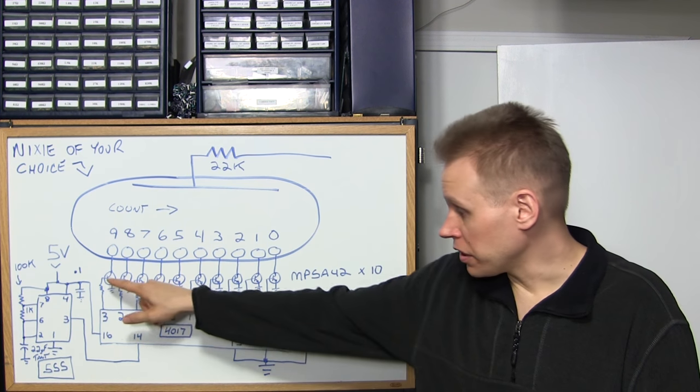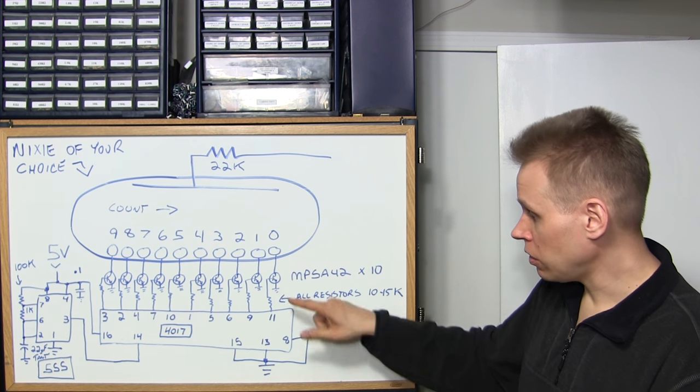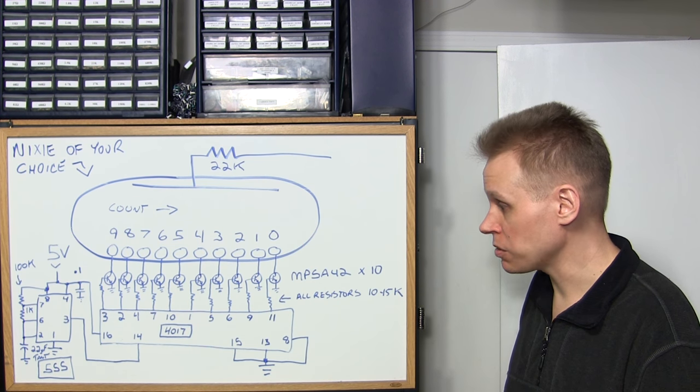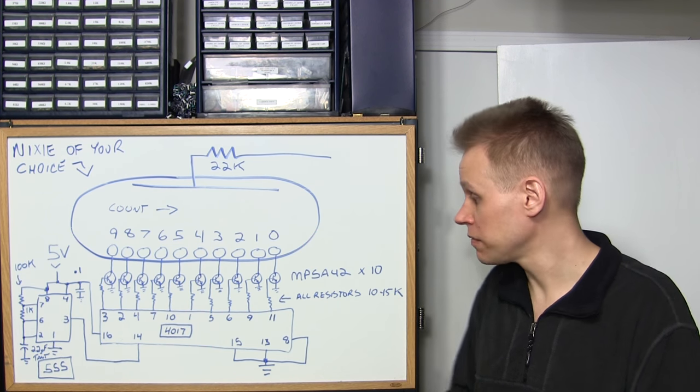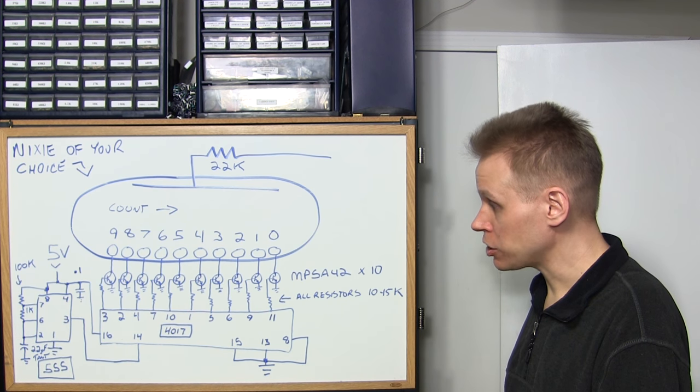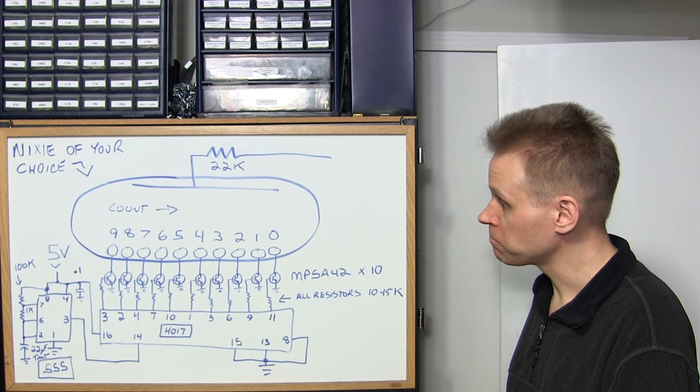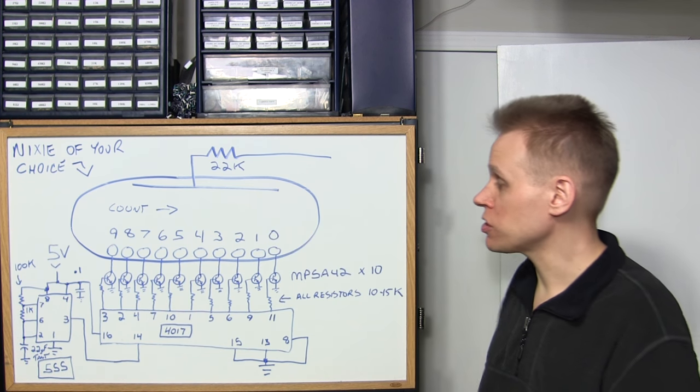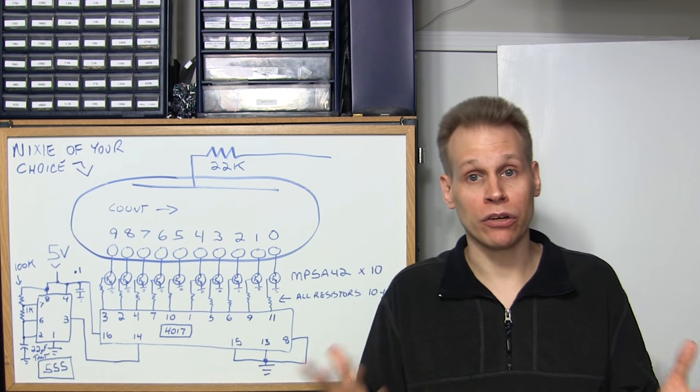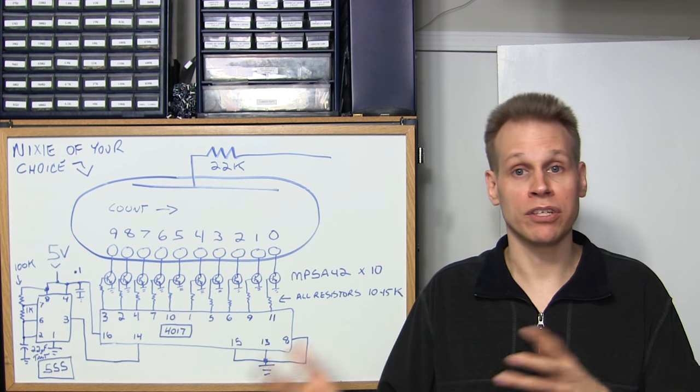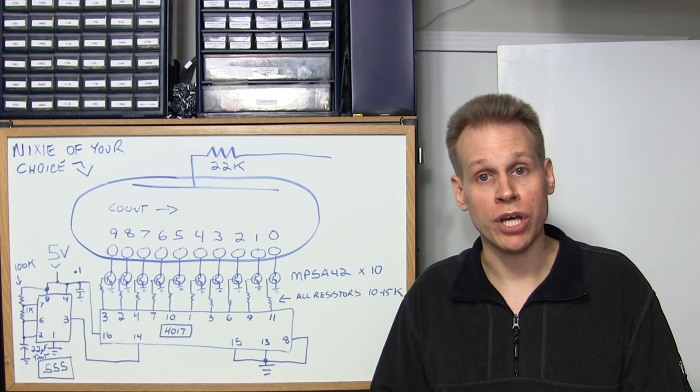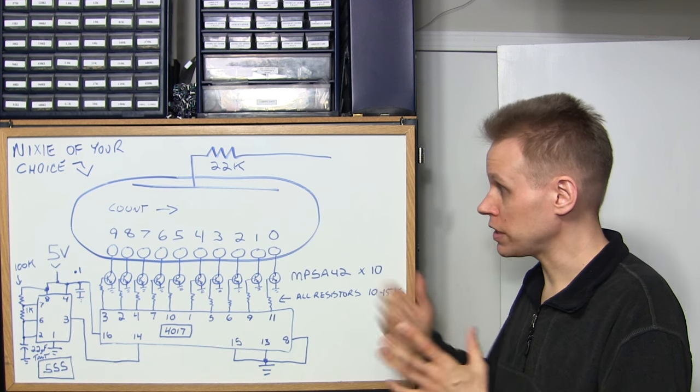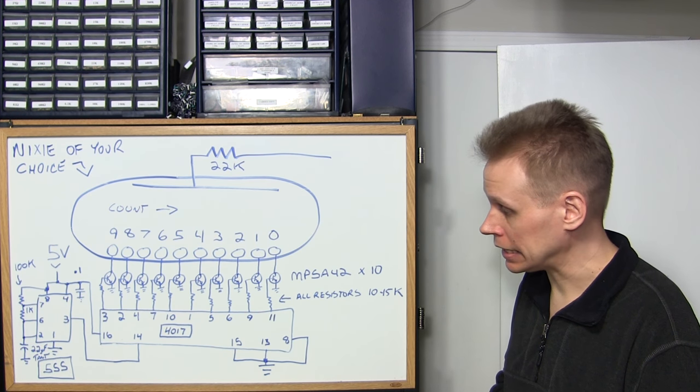All the transistors you see are MPSA 42's and all the resistors that run to the base are 10 to 15K resistors. I use 10K myself. When you're playing with your different Nixie you're probably going to have to play with this current limiting resistor because if you have a larger or smaller tube with different high voltage it might require you to change the current limiting resistor.